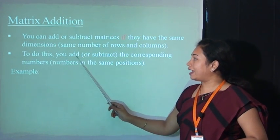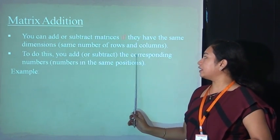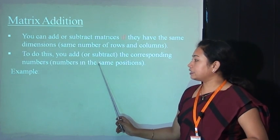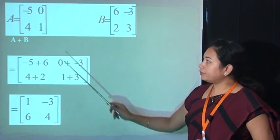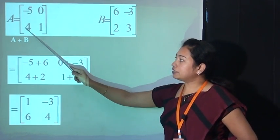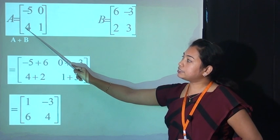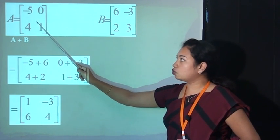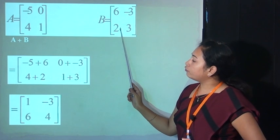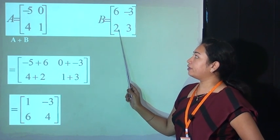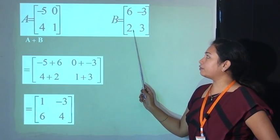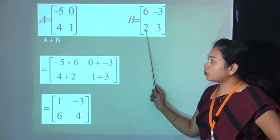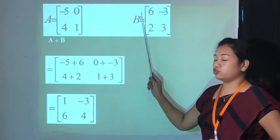To do this, you add or subtract the corresponding numbers in the same positions. For example, here the dimension of this matrix is 2×2, that means there are 2 rows and 2 columns. And the order of this second matrix is again 2×2, so you can add these two matrices.